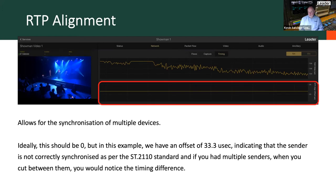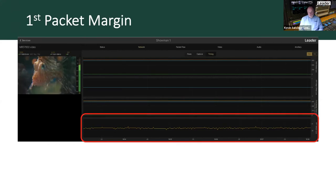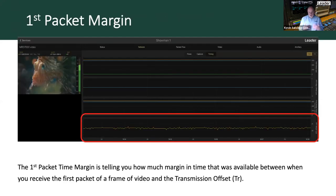An RTP alignment offset of 33.3 microseconds indicates the sender is not correctly synchronized as per the 2110 standard. If you had multiple senders and cut between sources, you would notice a timing difference. These parameters allow you to understand the behavior of the senders and the behavior of the network the packets are traversing. There's also the first packet margin — how much time margin was available between receiving the first packet of the video frame and the transmission offset, which is another critical tool for understanding system performance.